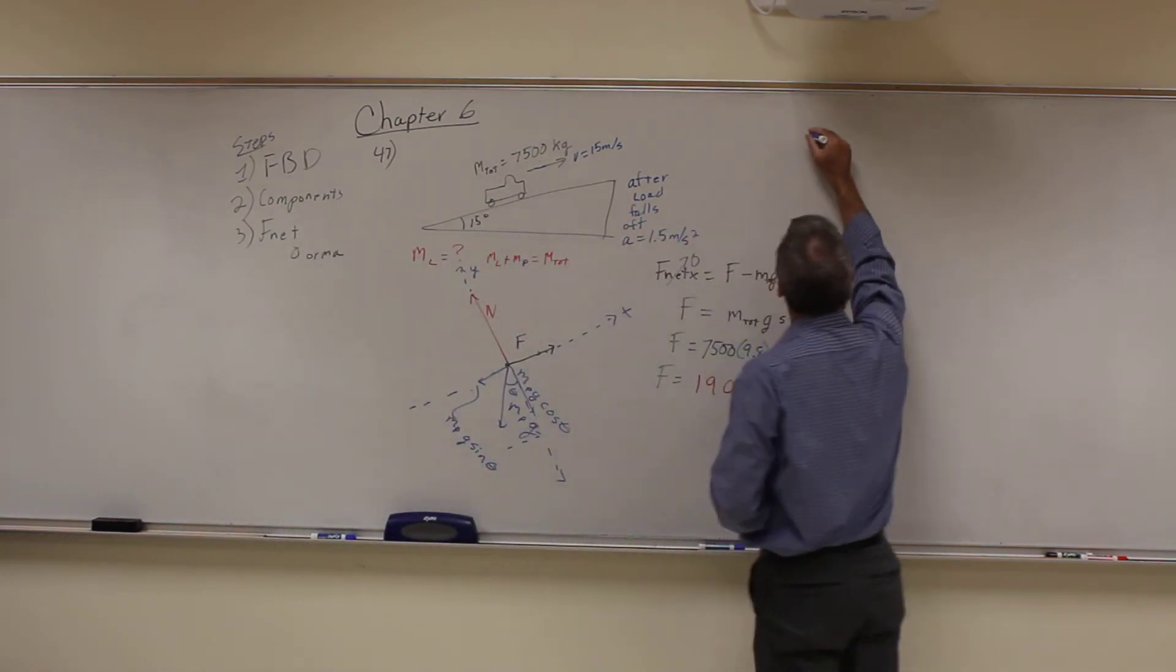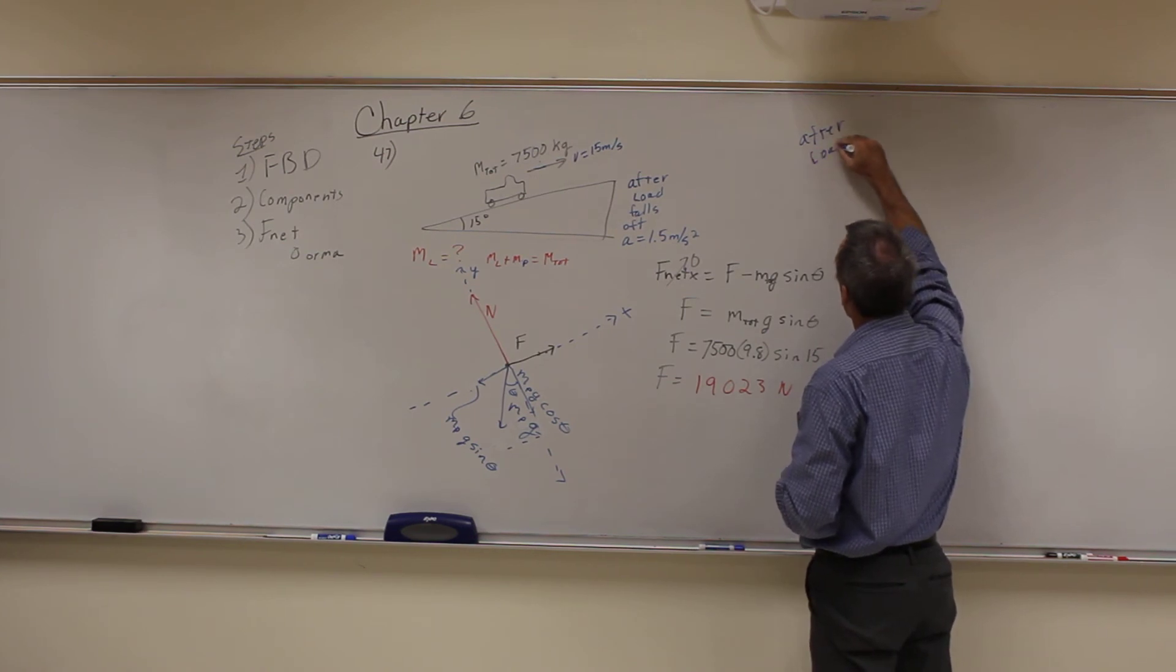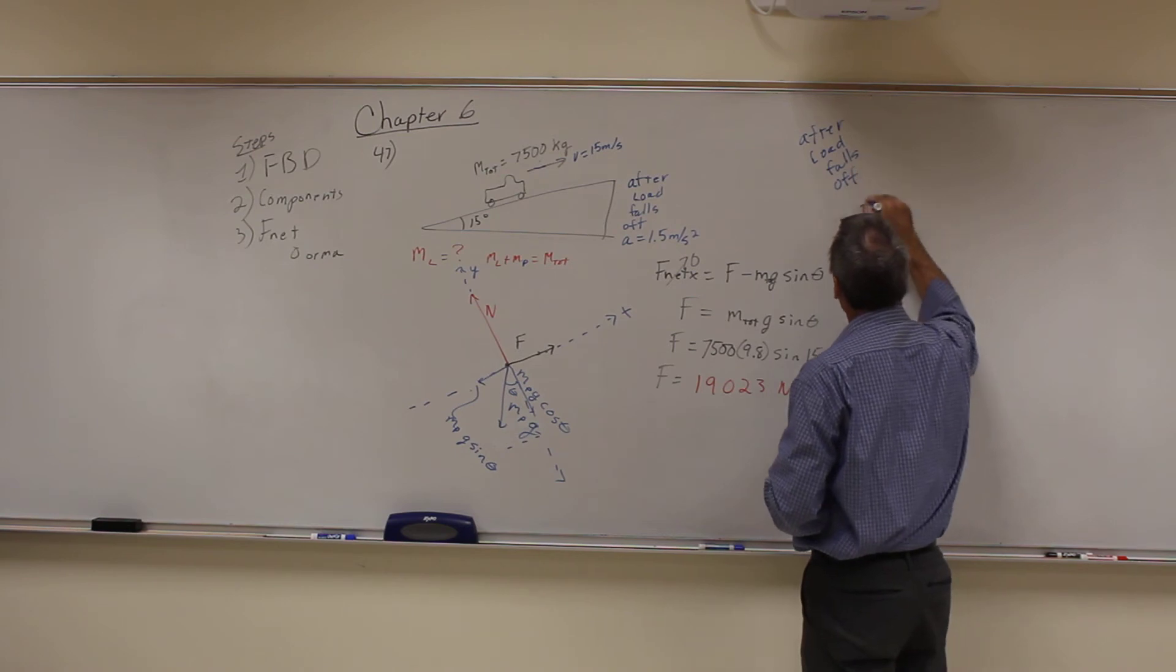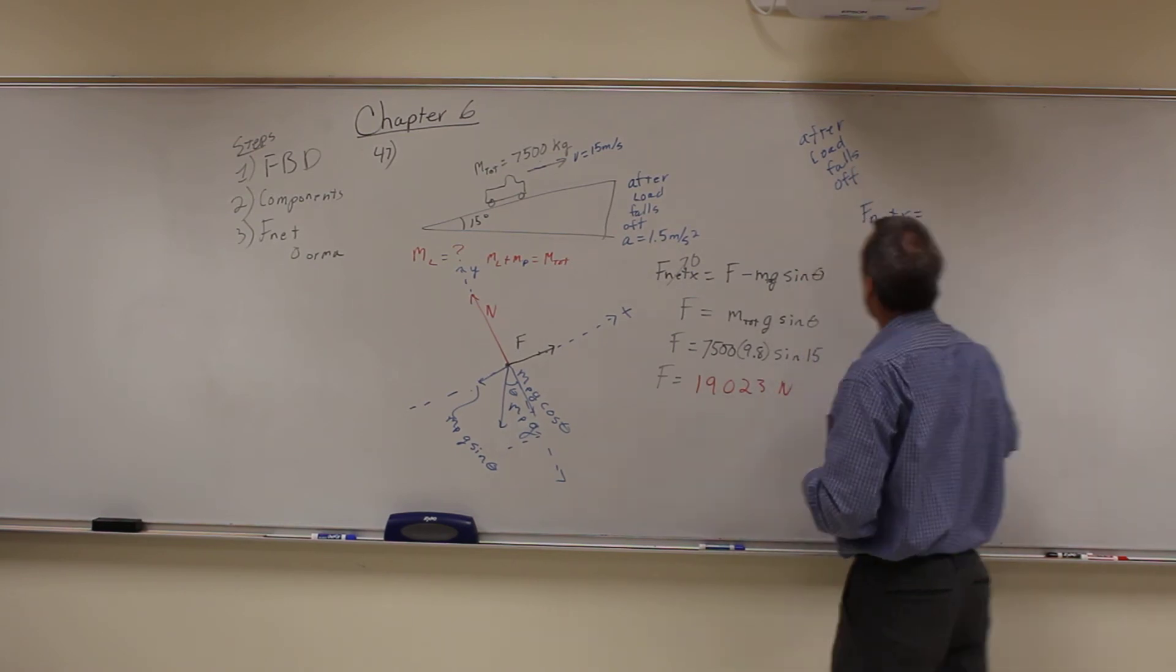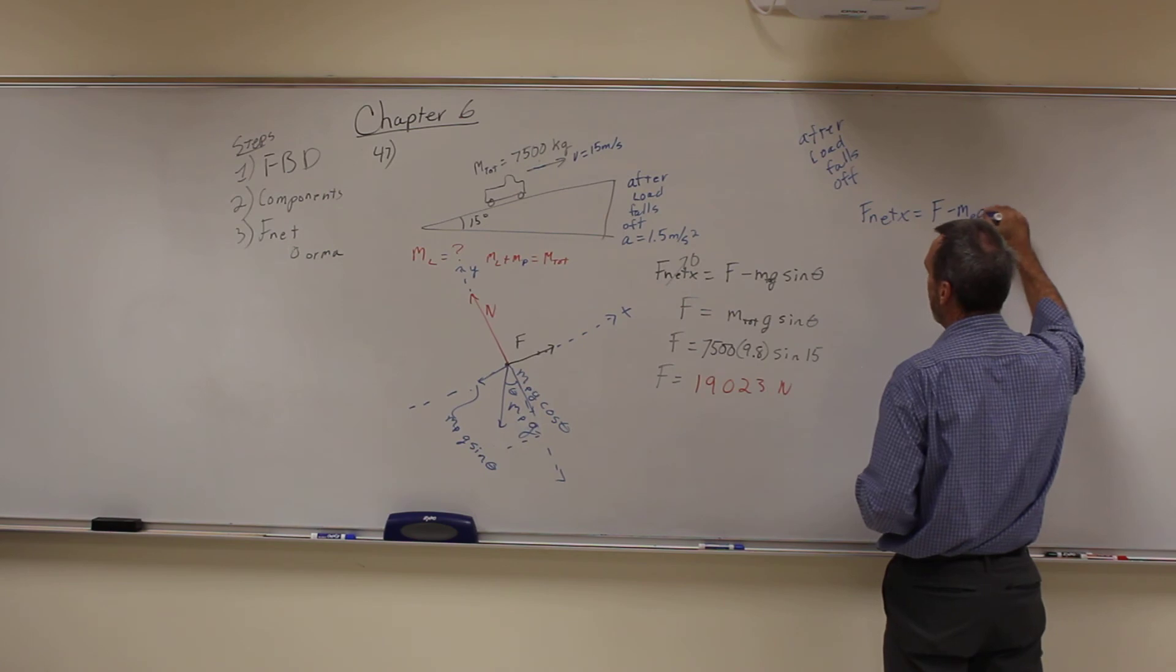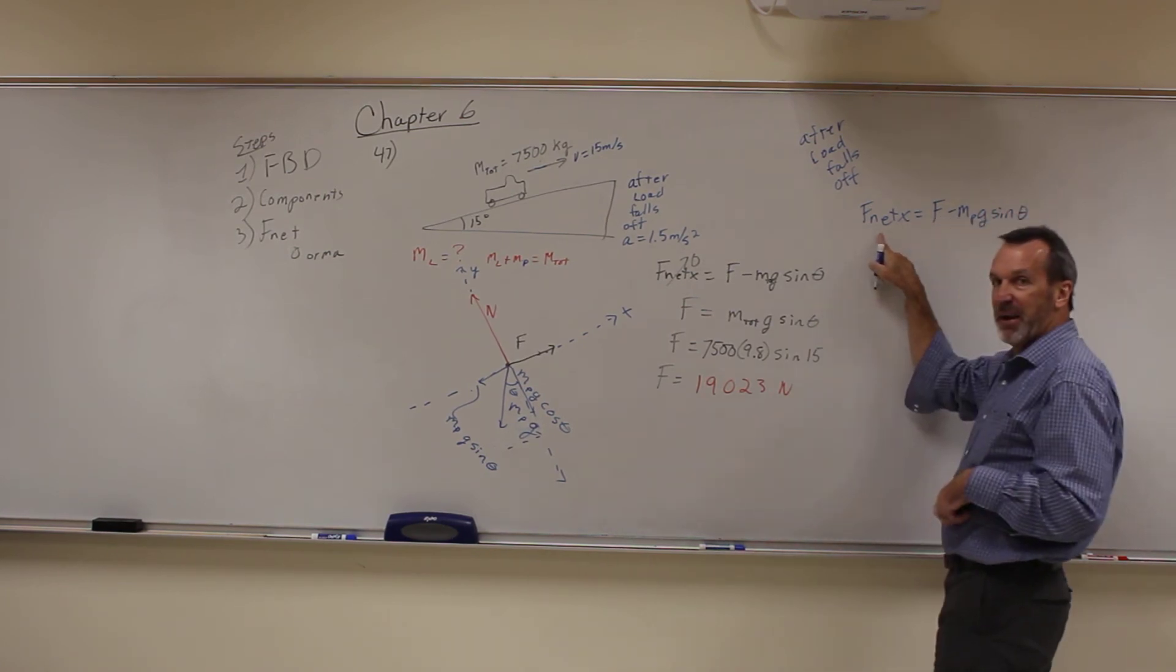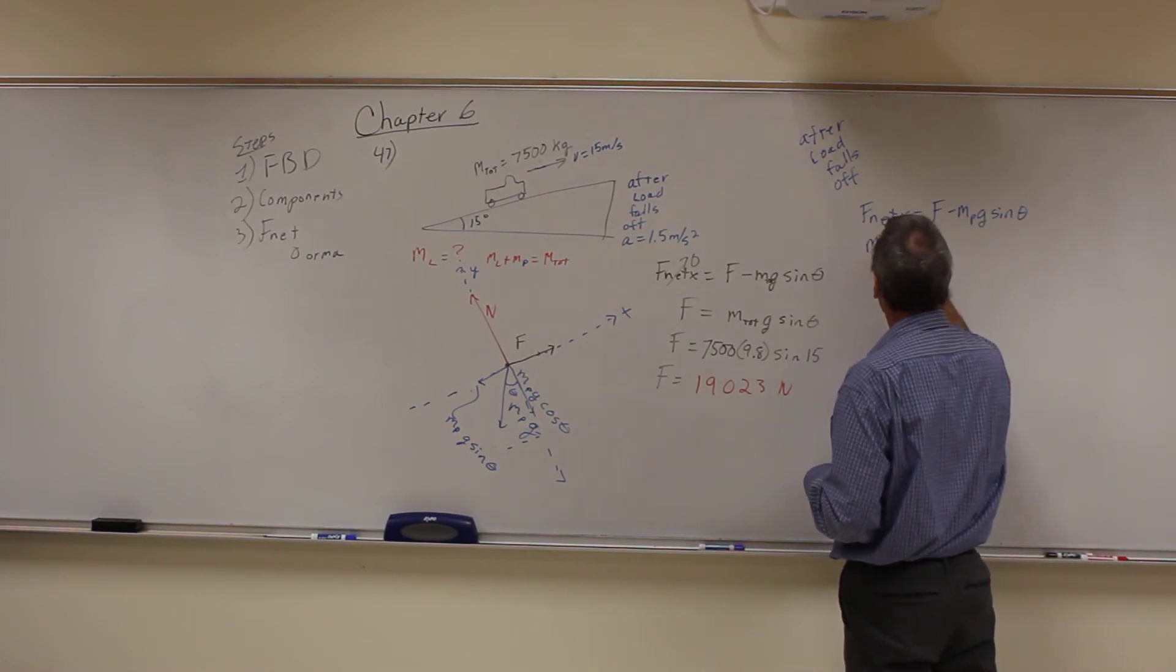So then we're going to do the same here. After the load falls off, I'm going to do F net X. And we find F net X is going to be equal to the same thing, F minus M pickup G sine of theta. But over here, now it's accelerating, so I have to write this as M A. So this is the mass of the pickup times the acceleration.